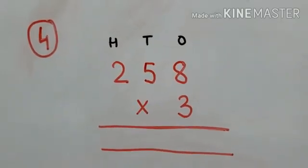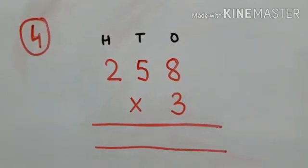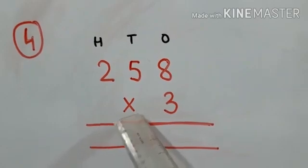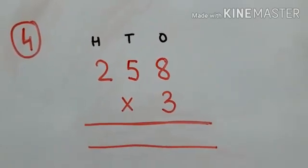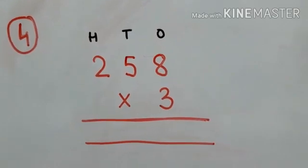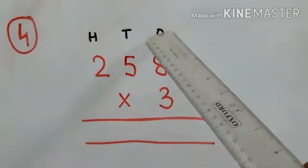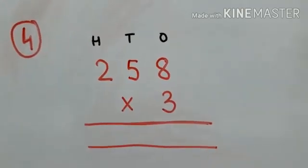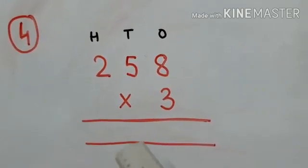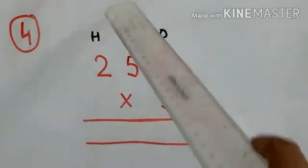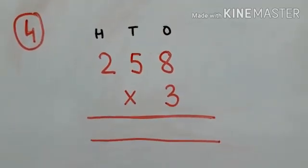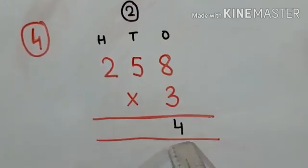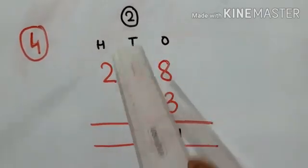Moving on to question number 4. Here we are having the number 258 and we have to multiply with 3. We start with the ones digit — we are having 8, so we multiply 3 with 8. Three eights are 24. We write 4 down and 2 is carried to the tens place.